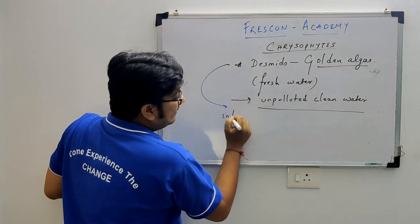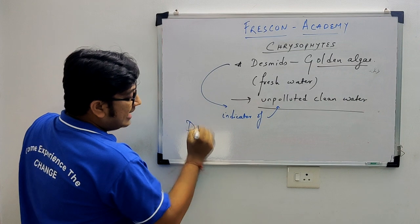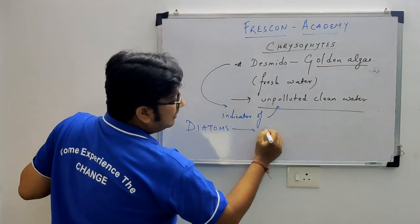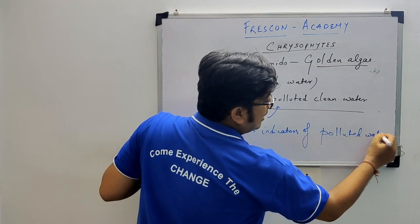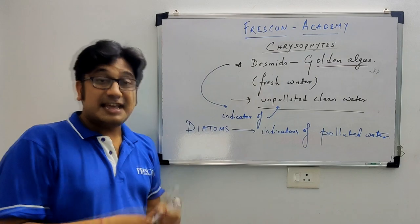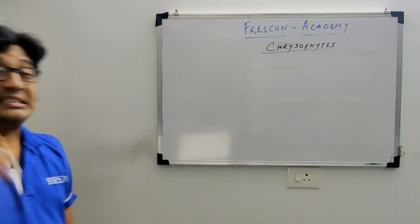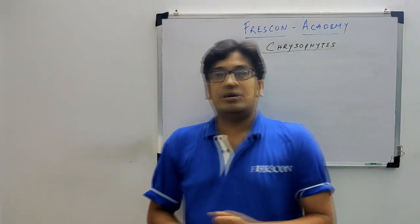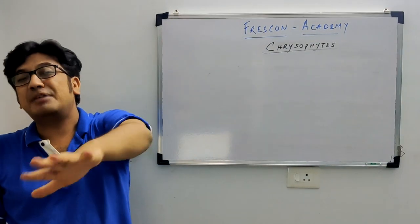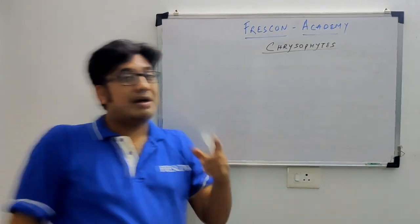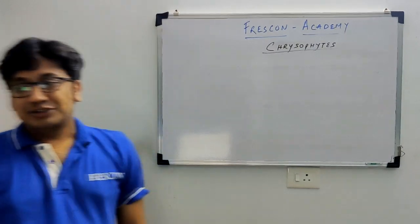So remember: Diatoms are indicators of polluted water. Desmids are golden algae — indicators of unpolluted fresh water. If you find Desmids in a water body, the water is clean. If you find Diatoms, the water may be polluted. That's Chrysophytes for you — fresh water and marine, microscopic, diatomaceous earth, frustule cell wall.